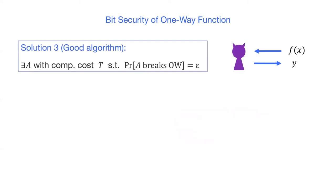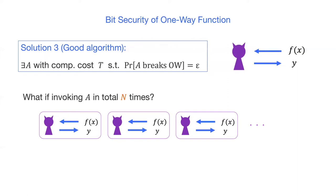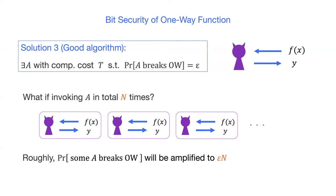We may have another solution. Namely, there is some good algorithm A with computational complexity t, such that A breaks the one-wayness with probability epsilon. In this case, if we invoke the algorithm n times in total, the probability that some invocation breaks one-wayness will be amplified to epsilon·n. Since it is sufficient to choose n = 1/epsilon, the total computational cost of order n·t is equal to order t/epsilon.